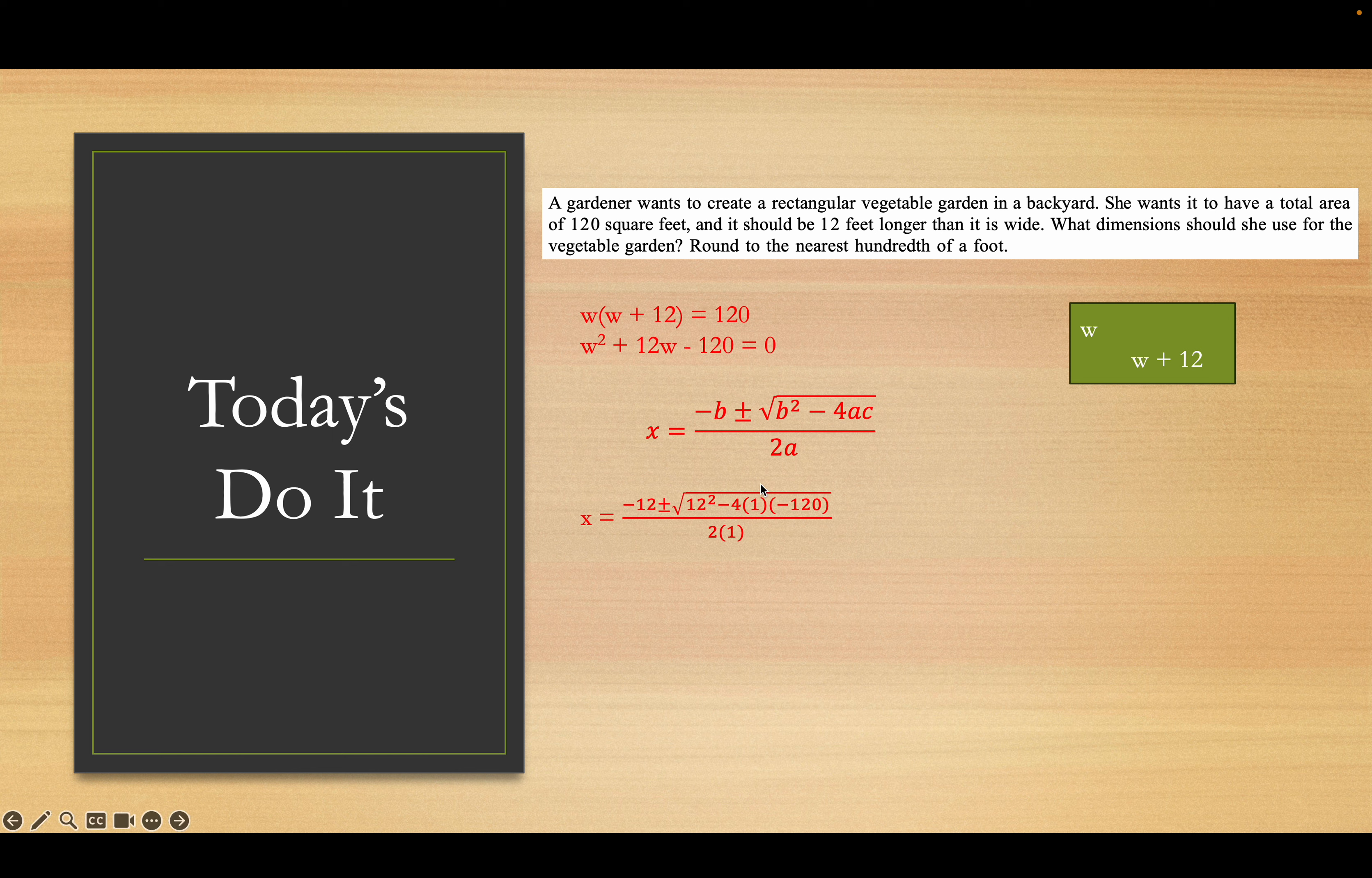So, x will be, or w will be, the negative of b, which is negative 12 plus or minus the square root of 12 squared minus 4 times 1 times negative 120, all over 2 times 1. Which, if we keep going, is negative 12 plus or minus the square root of 144 plus 480, all over 2.